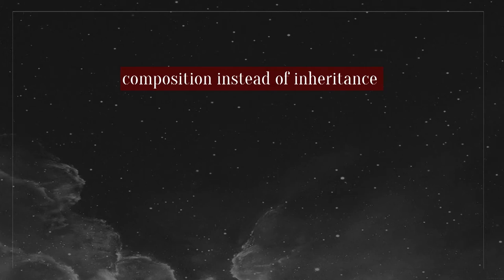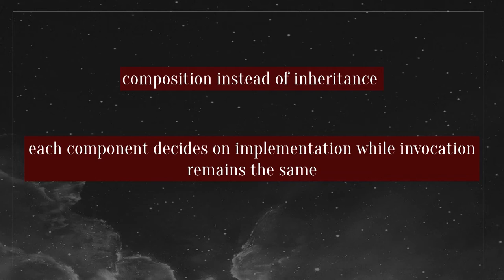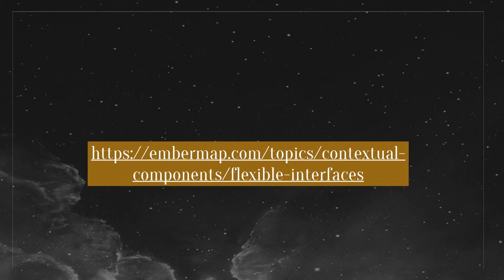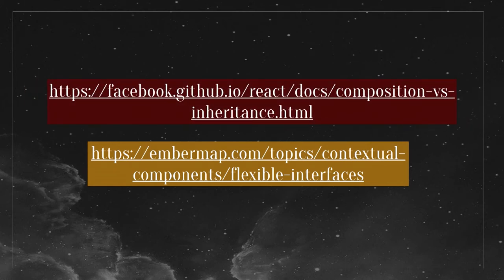The idea is inspired from object-oriented languages: composition instead of inheritance is better when it comes to components. Design a component so it does one thing and does it really well - better encapsulation and clarity. While the implementation of the title or body can change over time, the big card component's interface to those smaller components doesn't change, so it can be reused in different situations. In Ember this is called contextual components - there's a great tutorial on the Ember docs for that. React also has a great blog post about why you should use composition instead of inheritance when writing components.